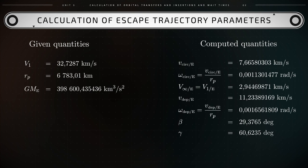We observe that v_dep_e exceeds v_circ_e. Therefore, at the appropriate location on the circular parking orbit, the spacecraft must ignite its engine to increase its speed from v_circ_e to v_dep_e. Only then can the spacecraft leave Earth's orbit. The appropriate location when the engine is ignited corresponds to the position vector rp making the angle gamma equal to 60.6235 degrees below the line connecting the centres of the Sun and Earth.